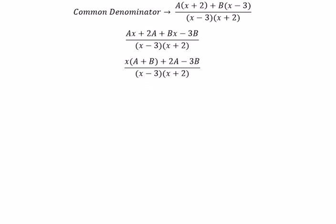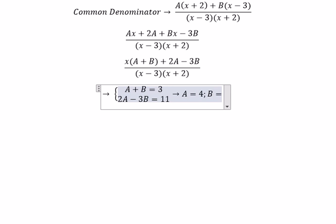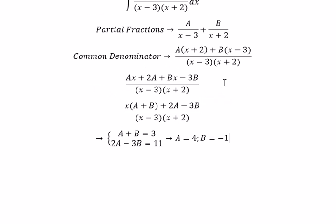And now we can create the system. So you go about A equals to number 4, B equals to negative number 1.